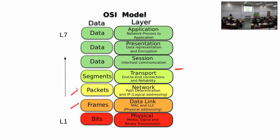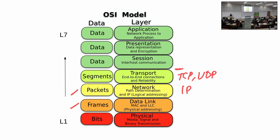This is L3 — what is the most popular protocol in L3? IP. So IP comes in L3. And this is L4 — you've heard of TCP and UDP. We don't really talk about L5 and L6; we just jump to L7, which is the application layer.